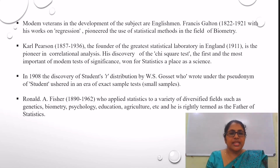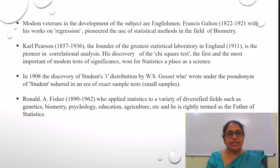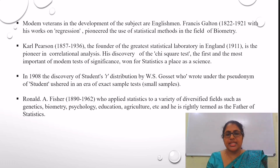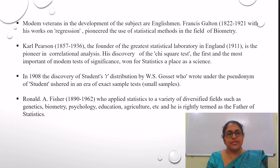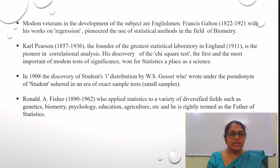Modern veterans in the development of the subject are Englishmen. Francis Galton, with his work on regression, pioneered the use of statistical methods in the field of biometry. Karl Pearson, the founder of the greatest statistical laboratory in England, is the pioneer in correlation analysis. His discovery of the Chi-square test, the first and most important of modern tests of significance, won statistics a place as a science.